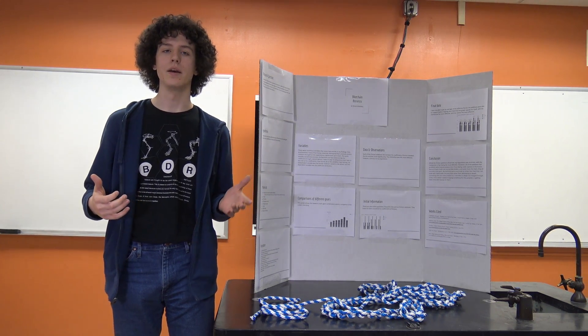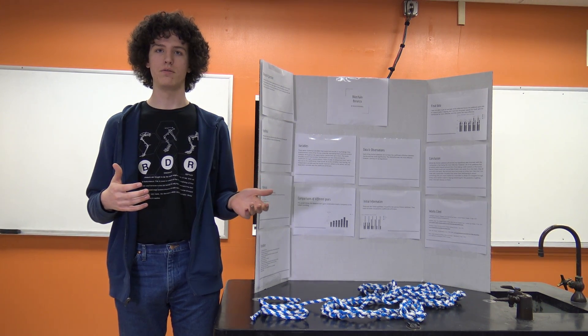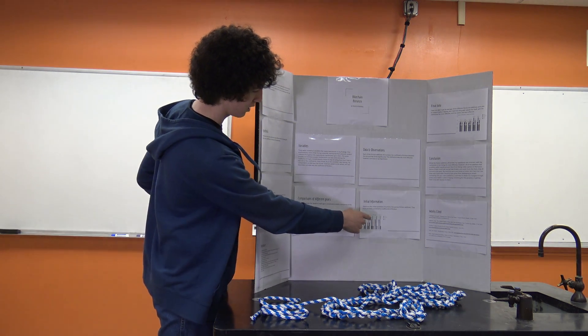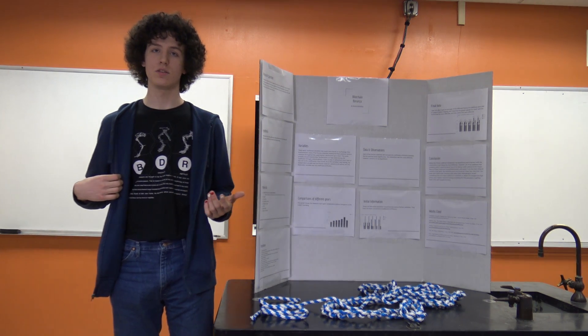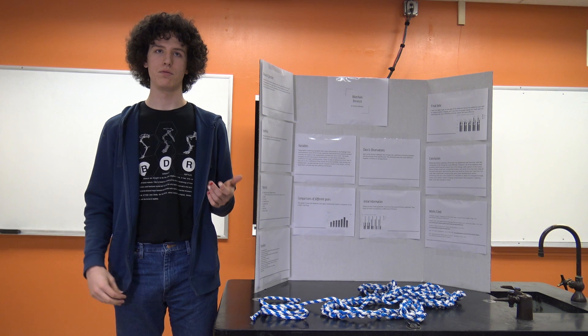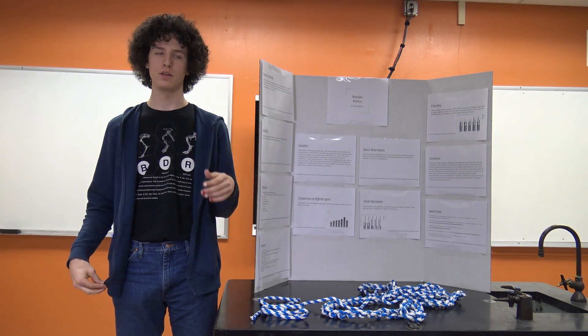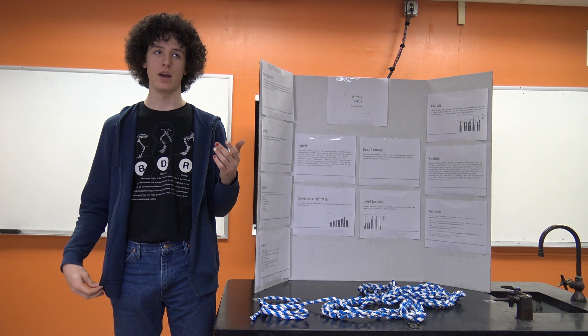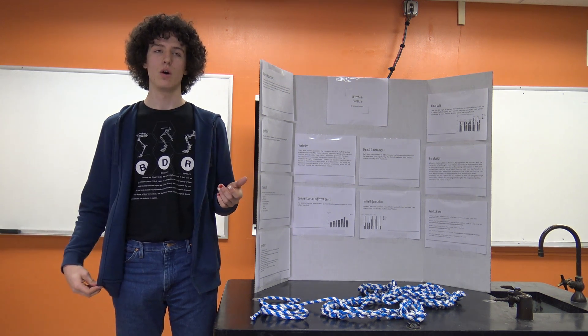So if you take a look here, with the clothesline the wheels started to spin out on Stump Jumper in the second and third gears.